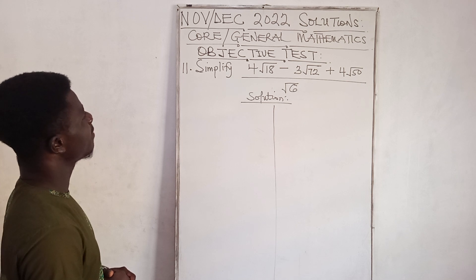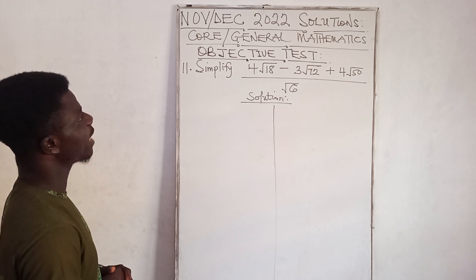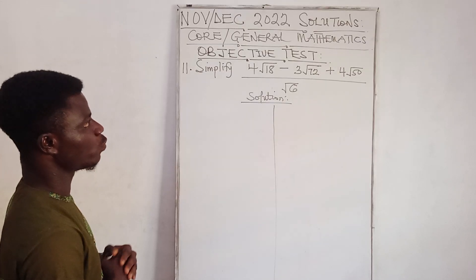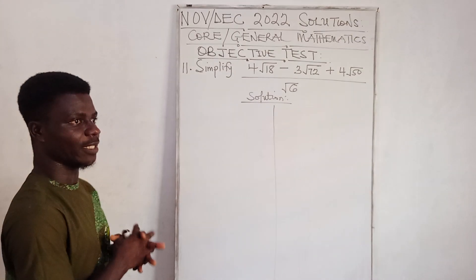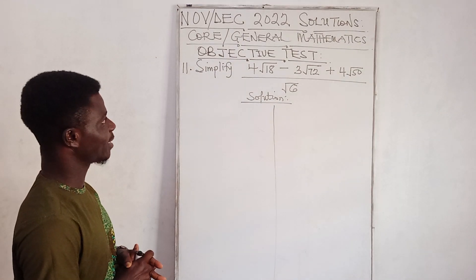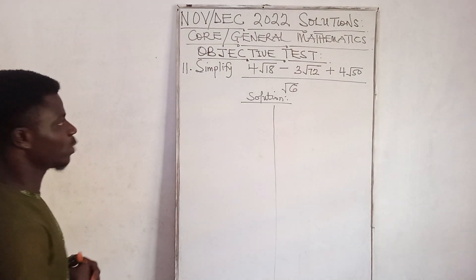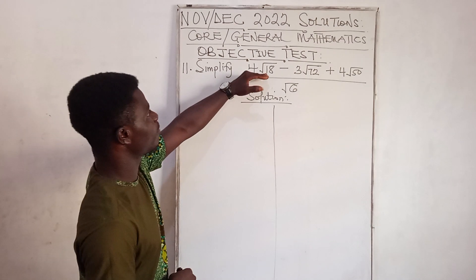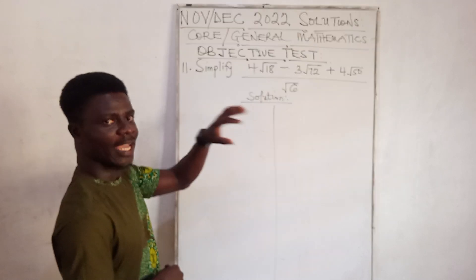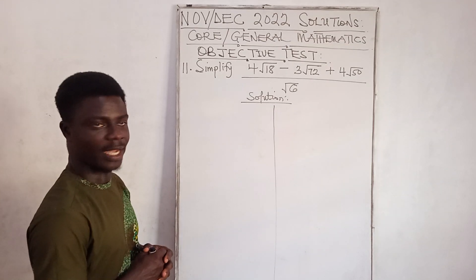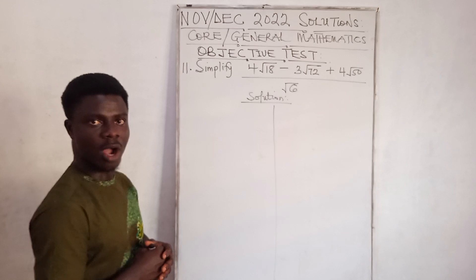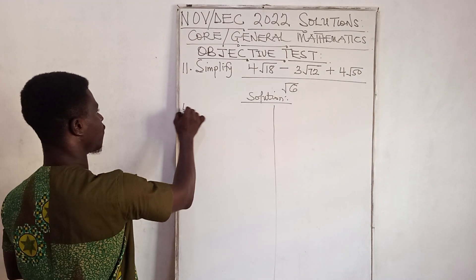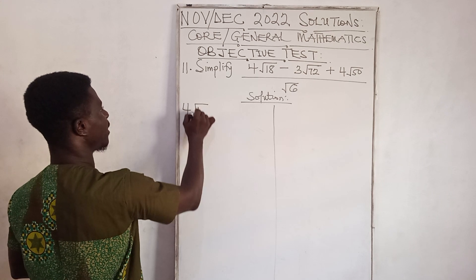Question 11 reads: simplify 4√18 minus 3√72 plus 4√50, all divided by √6. We have to simplify that expression, so we take each term and simplify before combining. Let's start with 4√18.